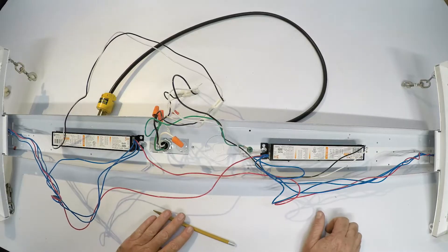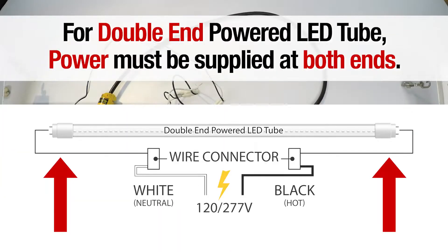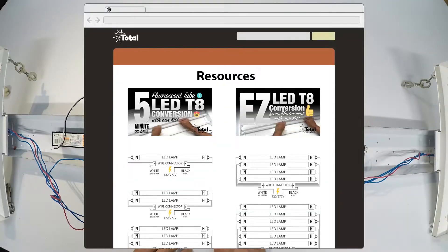The end result and the end goal is on a double-ended LED tube, we need to supply power to both ends. One end is hot and one end is neutral. We have all kinds of drawings and diagrams on our website so you can see what I mean.